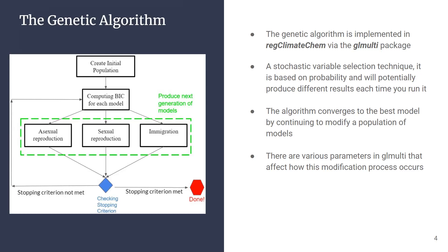This algorithm converges to the best model by continuing to modify a population of models. There are various parameters in GeoMulti that affect how this modification process occurs, and this is what we are doing our optimization study on.